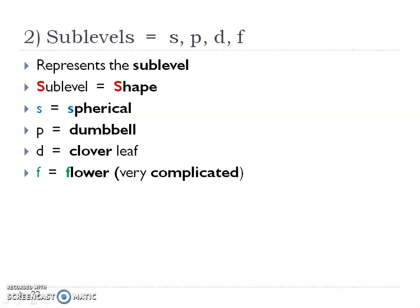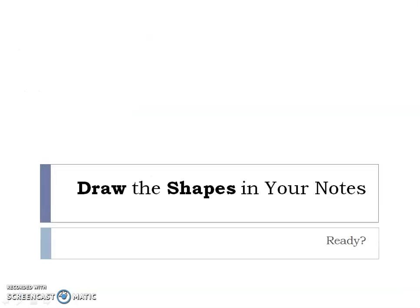Sublevels are just shapes, and shapes help us decide the density — where those electrons are most of the time in that one shape. What you need to know right now is: the S is spherical, the P is dumbbell, the D is a clover shape, and the F I like to call flower. That F is going to be really complicated.